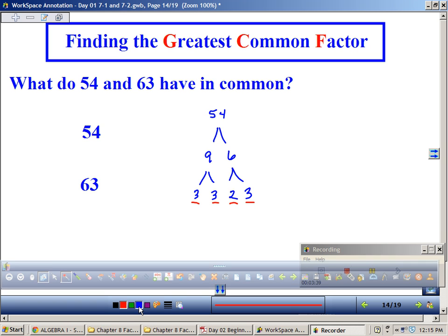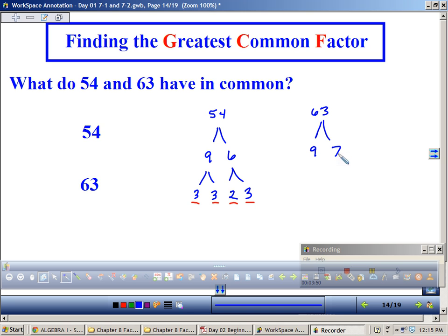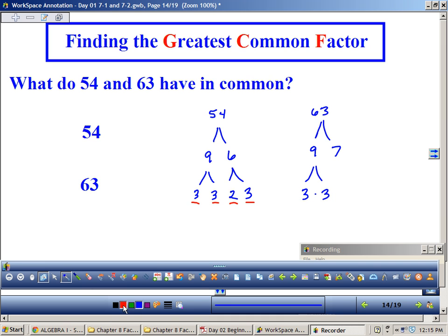So 3 times 3 times 2 times 3 makes 54. All right. Let's do the next one over here. 63. You don't have to. I would. 9 times 7 is 63? What about 9? So 3 times 3 times 7 makes 63? Yes.